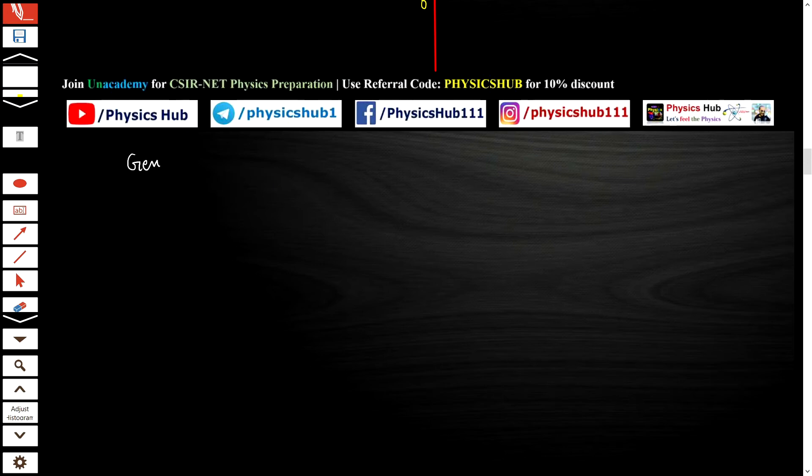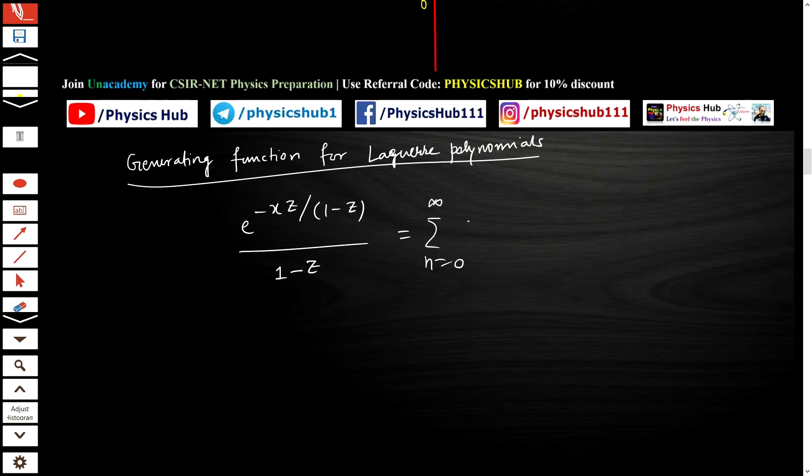Let us now talk about the generating function. The generating function, as the name suggests, generates this special function. The generating function for Laguerre polynomials is given by: e^(-xz)/(1-z) = Σ(n=0 to ∞) z^n Ln(x). As you can see in this expression, the coefficient of z^n is the Laguerre polynomial. That is why this expression is known as the generating function.